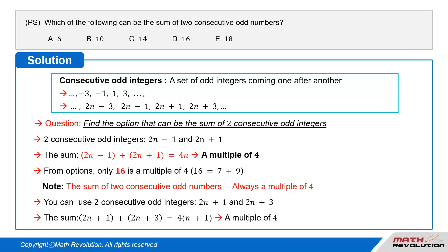You can use 2 times n plus 1 and 2 times n plus 3 instead of 2 times n minus 1 and 2 times n plus 1.